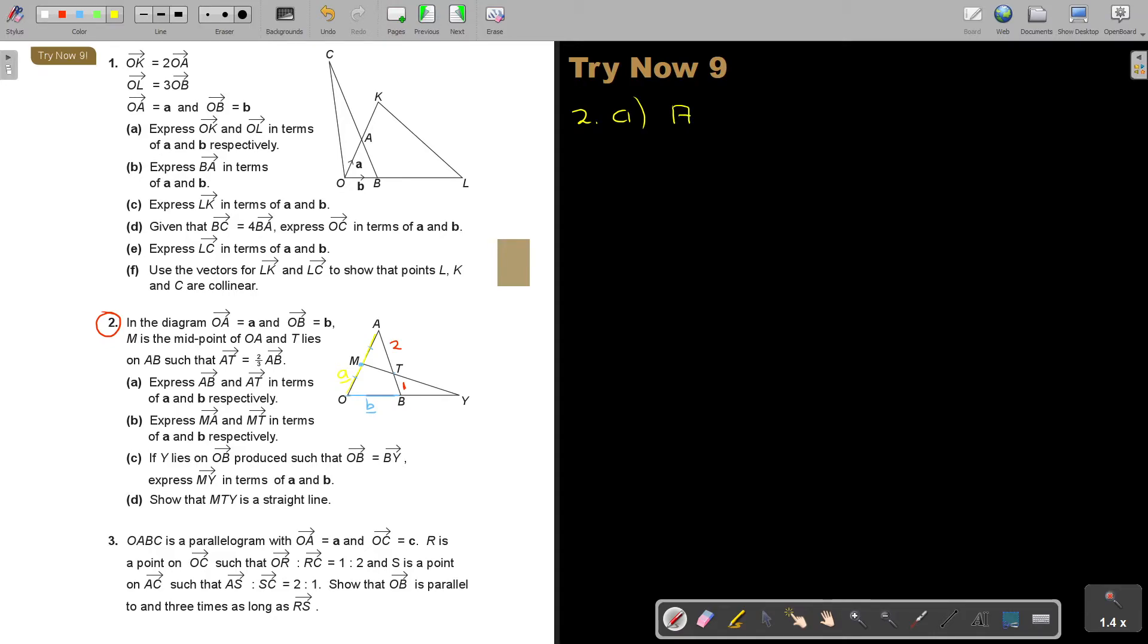Let's start with number A. Express AB and AT in terms of a and b. Let's start with AB. Now, where is AB? If this is the long road, starting at A going to B, what is the short road? This is the short road. The long road will be AO plus OB. So AO. Now, remember, OA was a. But AO will be negative a and OB plus b. Or b minus a. Doesn't matter.